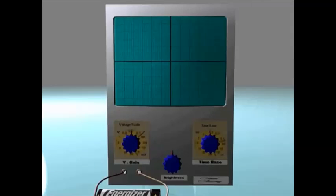This is what a cathode ray oscilloscope looks like. It has a Y gain, or voltage scale, and it also has a time base. And we're going to see how both of those things work now. There's a screen too, which is very important.